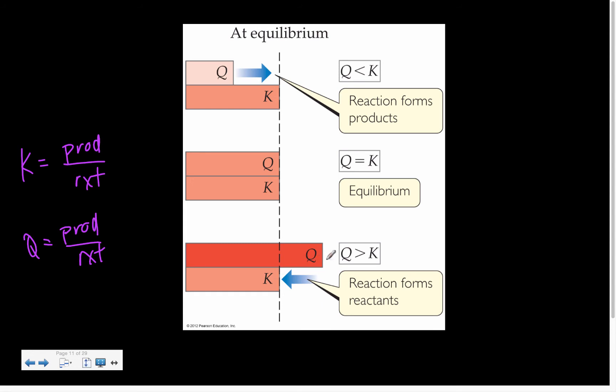If my Q is greater than my K, that's kind of like saying I have too much product, so I need to consume that to make my reactant. And that's what all this analysis is saying, which I think is really reasonable.